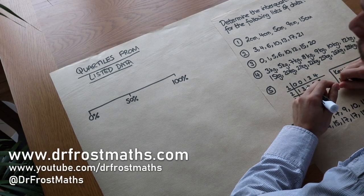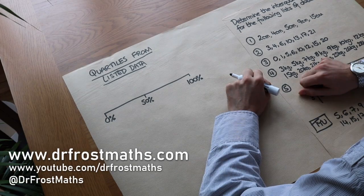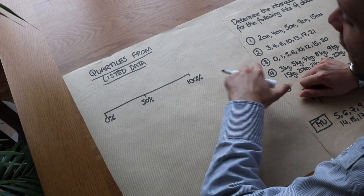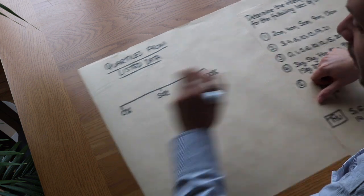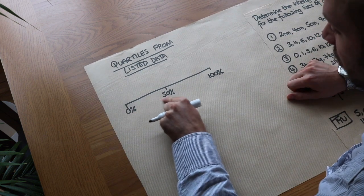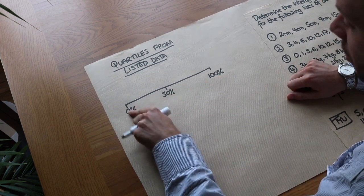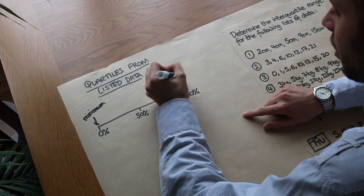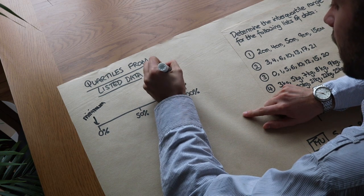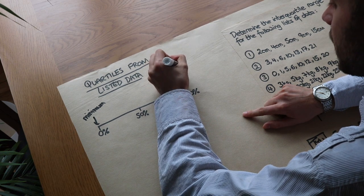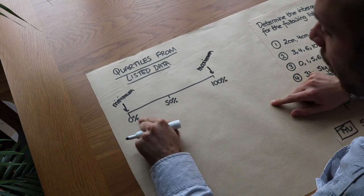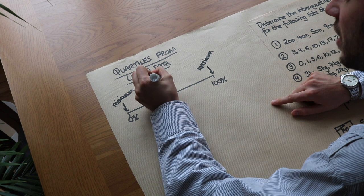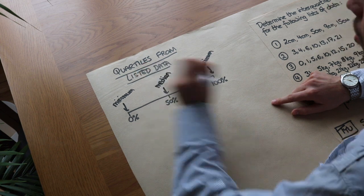Hello and welcome to this video on quartiles from listed data. Suppose we had a list of data — let's say the heights of people in your class — and that you'd ordered them from the smallest value to the largest value. This tells you what percentage of the way along the data you are, starting from the smallest value. So this would be your minimum value, and 100% along the data would be your maximum value. When we're halfway across the data, that middle value is known as the median — meaning the middle of the data.